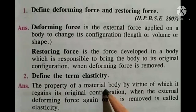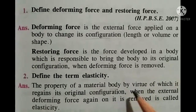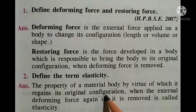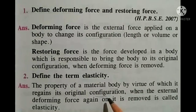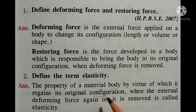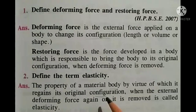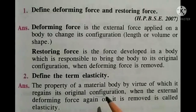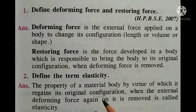Elasticity is a property of any material body by virtue of which it regains its original configuration. For example, if you take a rubber band and stretch it — applying a deforming force — when you remove that external force, the rubber returns to its original position. That is known as the elasticity of that material body.